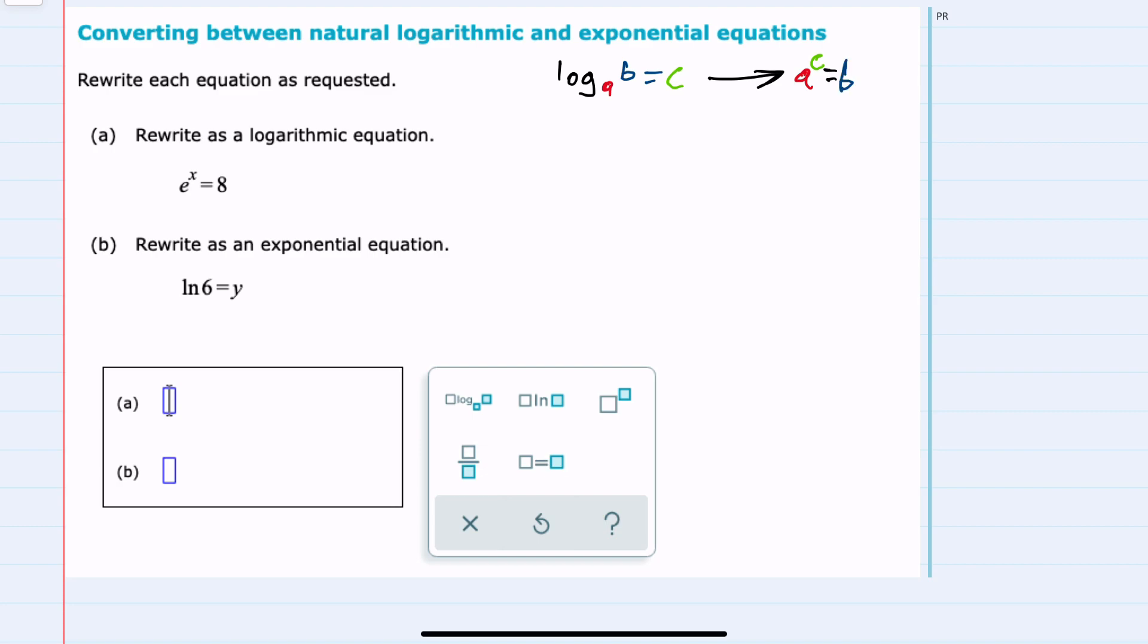So here for part A, I have E to the X. So that means that my logarithm is going to be a base E, and we know that we can write that as the ln, or the natural log. That means that we are taking the log base E. What the exponential calculation equals will be what we are taking the logarithm of, and logarithms equal exponents, which here is X.